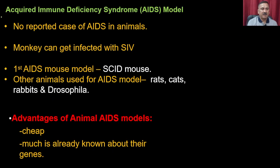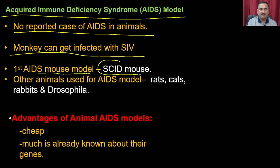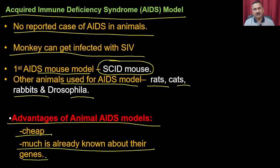For the AIDS model, there are no reported cases of AIDS in most animals — monkeys can only be infected with SIV. The first AIDS mouse model is the SCID mouse, and animals used for AIDS models include rats, cats, rabbits, and Drosophila. The advantage of animal AIDS models is that they are cheap and much is already known about their genes, making it easier to decipher results.